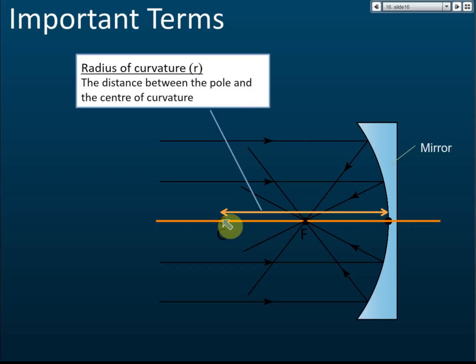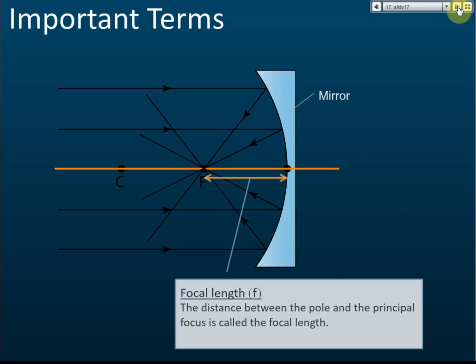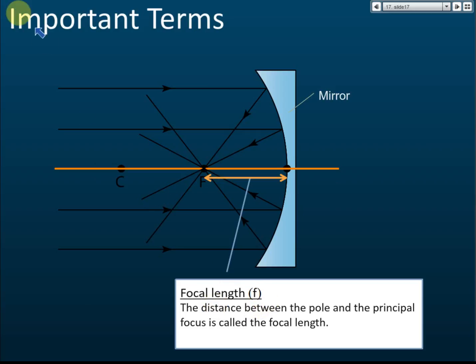The distance from the pole to the principal focus is called the focal length, denoted by the symbol f (small letter f).